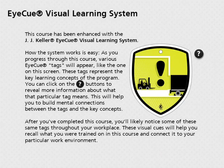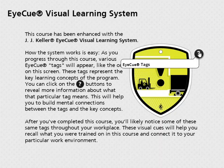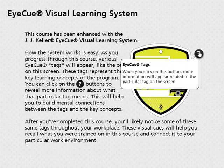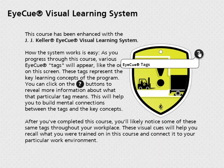This course has been enhanced with the JJ Keller IQ Visual Learning System. How the system works is easy. As you progress through this course, various IQ tags will appear, like the one on this screen. These tags represent the key learning concepts of the program. You can click on the buttons to reveal more information about what that particular tag means.